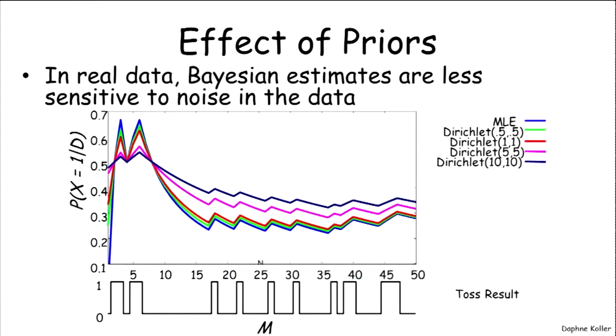From a pragmatic perspective, it turns out that Bayesian estimates provide us with a smoothness where the random fluctuations in the data don't cause quite as much random jumping around as they do, for example, maximum likelihood estimates.